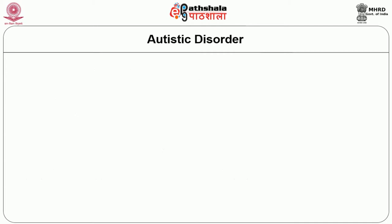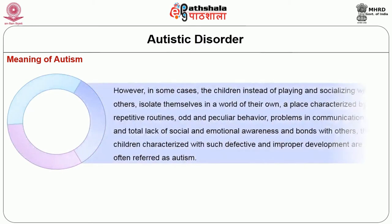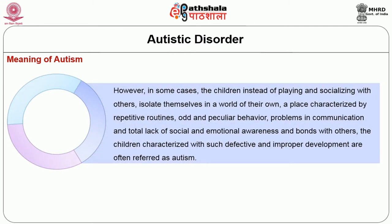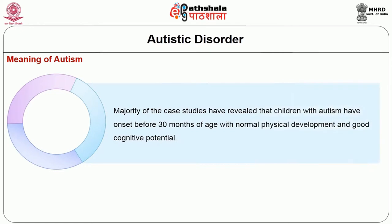The second topic is autistic disorder. Most children naturally follow a normal course of development in terms of speaking, language acquisition and interacting with peers and family members. However, in some cases children isolate themselves in a world of their own — a place characterized by repetitive routines, odd and peculiar behavior, problems in communication and total lack of social and emotional awareness. Children characterized with such defective development are often referred to as having autism. Majority of case studies reveal that children with autism have onset before 30 months of age.